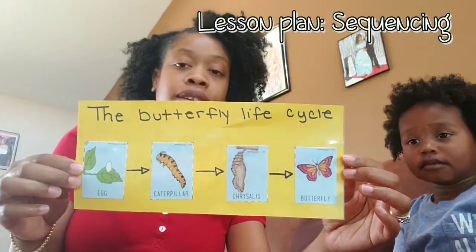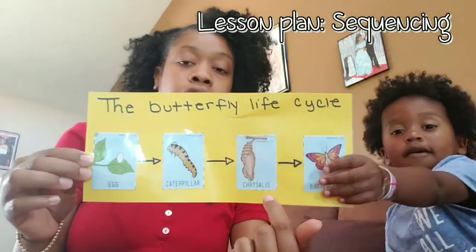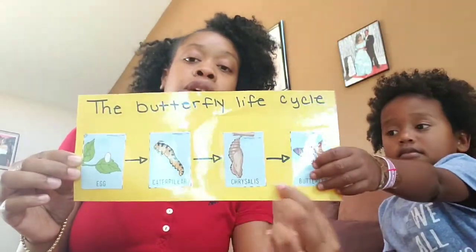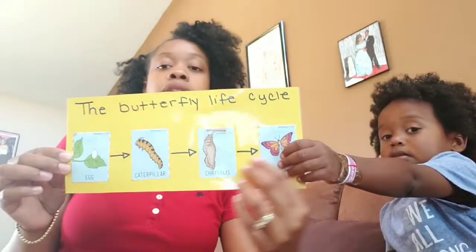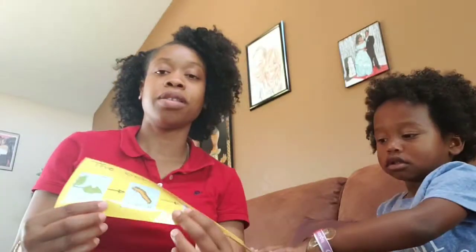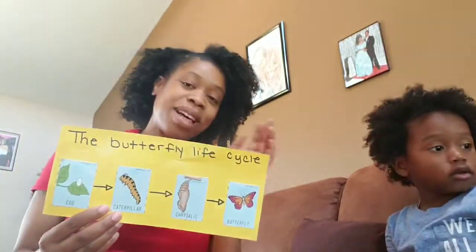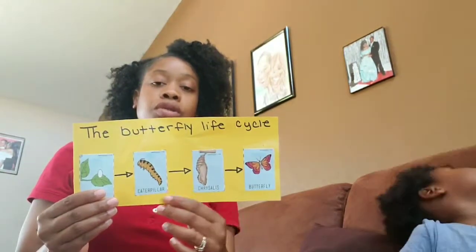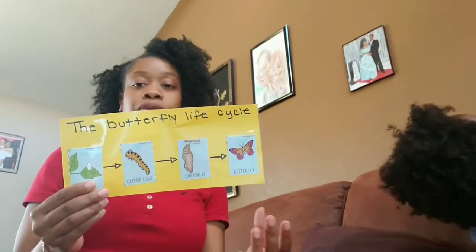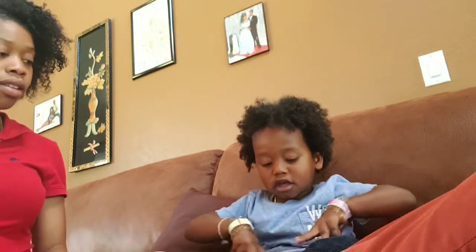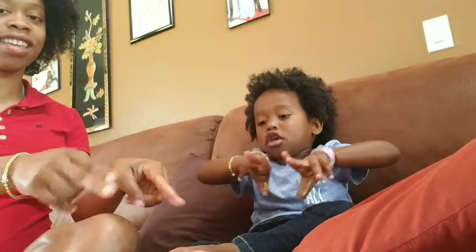Right now AJ will be doing this butterfly life cycle that I printed out from the internet. It's showing a caterpillar, a chrysalis, and a butterfly. This is not a cocoon because it's a butterfly — it would be a cocoon if this was a moth. We're doing the butterfly life cycle and he'll be placing the pieces while we talk about them. At the end of the video he will do it on his own without the background help.